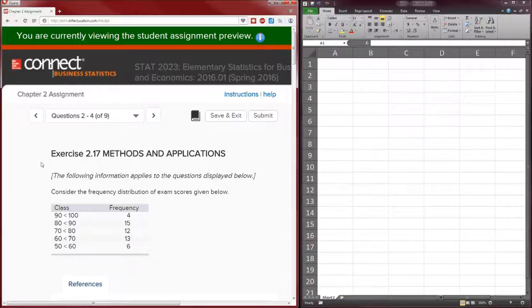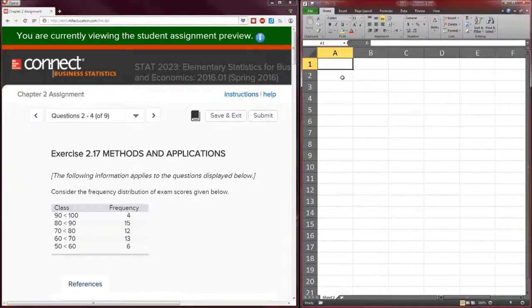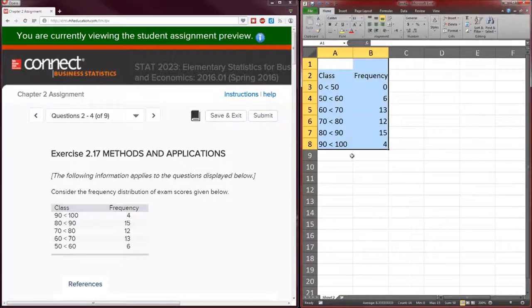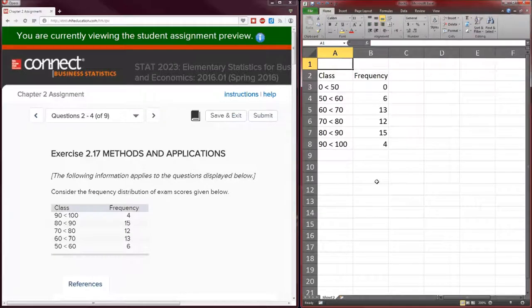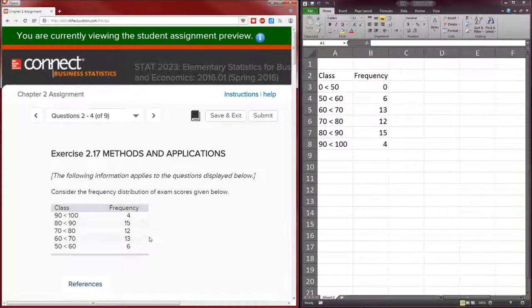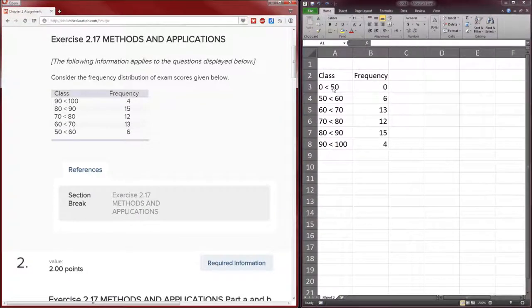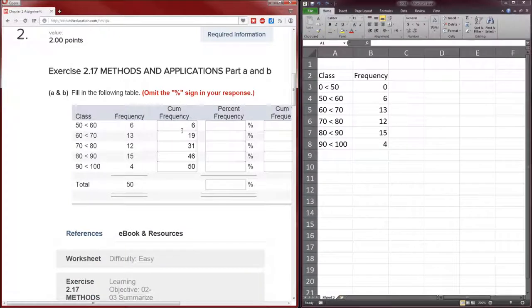Let's begin. Notice that this is going to be very similar to exercise 2.17 from the textbook. Here's the data. We're given the class and the frequency, and I'm going to put the class and frequency over here in Excel. Notice two things. One, I added the 0 to 50 class, which is not on here. And two, I changed the order simply because that will reflect this table that we have to calculate.